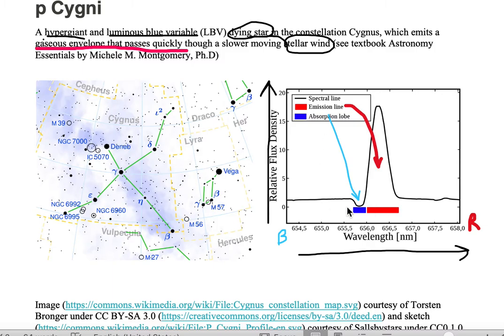So in this particular line, we see a decreasing first, followed by an increasing, and that is known as our P. Cygni profile.